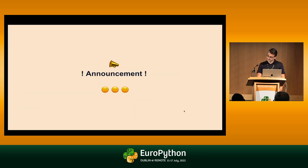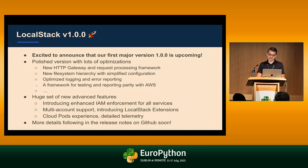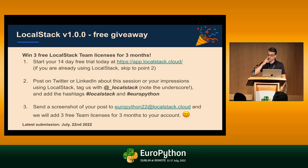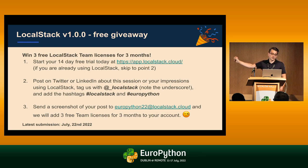It looks like I'm running a bit out of time. I want to just spend a moment on a quick announcement: we have a version 1.0 of LocalStack coming up, actually scheduled for release this week — if all goes well, today. We have a lot of cool new features and optimizations in the product. Also, if you post about us on LinkedIn or Twitter and tag us with LocalStack and EuroPython, you'll get a bunch of free licenses for your team — three licenses for three months.